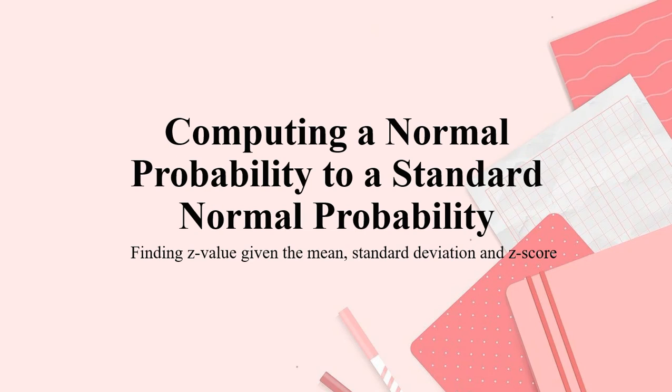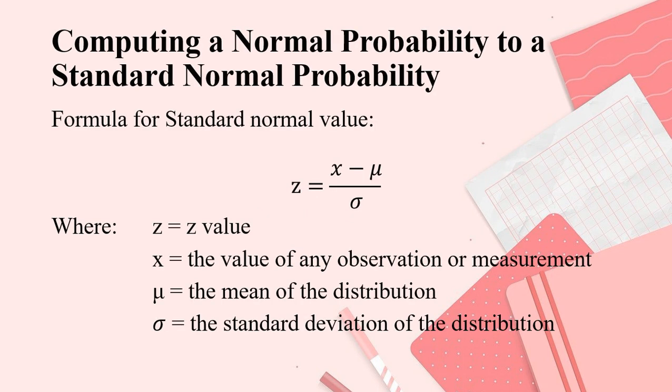Let's proceed with computing a normal probability to a standard normal probability where you need to find the Z value given the mean, standard deviation, and Z. So we have the formula for standard normal value.